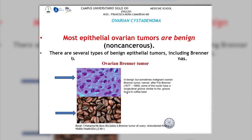As we just saw in the last picture, ovarian tumors can look very big, but most of them are not malignant — most cystadenomas are benign, and that's the good news. We have several types of these benign epithelial tumors, including the Brenner tumors, like the examples shown here.